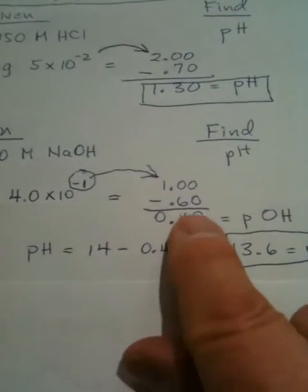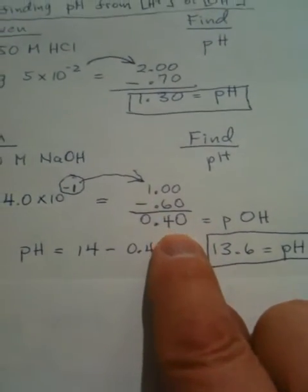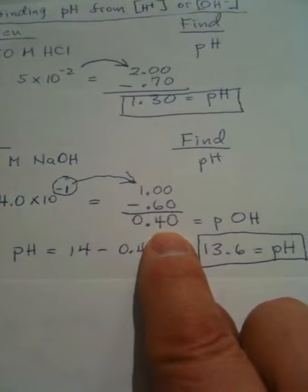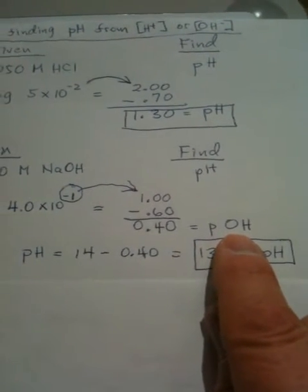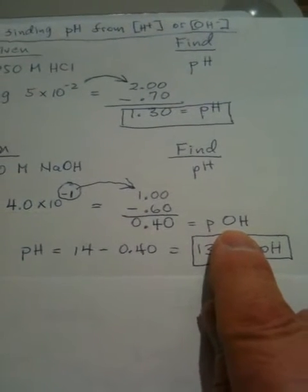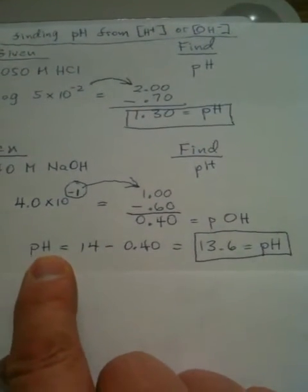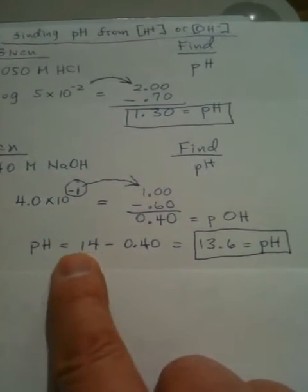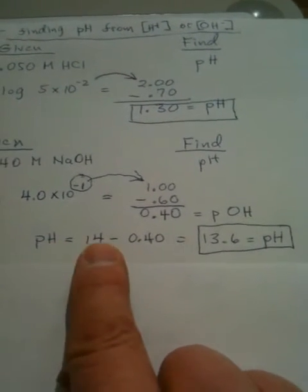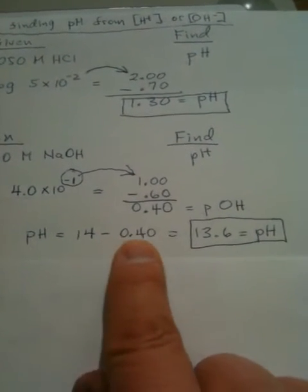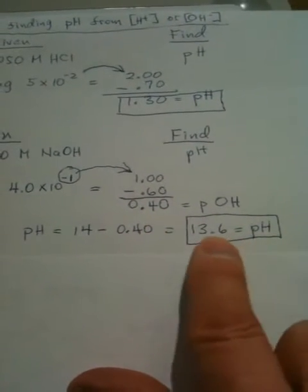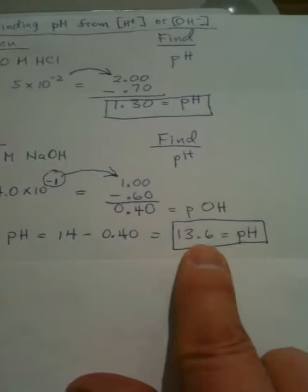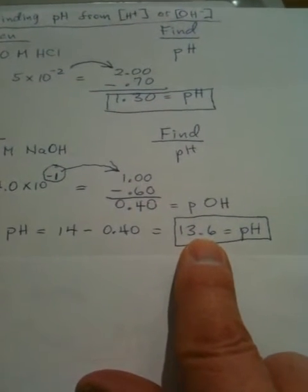So, we take our 0.6, and we put it right in here as a negative, and subtract it out to come out with 0.40, and that is the value of the pOH. So, when I take the pH, and to find the pH, I have to take 14 and subtract this number to come up with my pH. So, the actual pH here is 13.6.